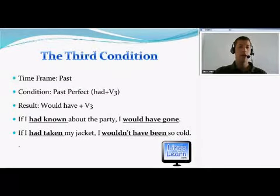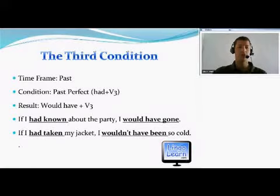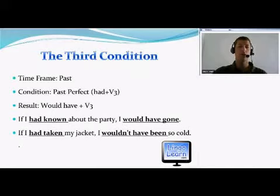The third condition talks about the past. For the condition we use past perfect, and for the result we use 'would have' and the third form of the verb. For example, if I had known about the party, I would have gone. Or, if I had taken my jacket, I wouldn't have been so cold.